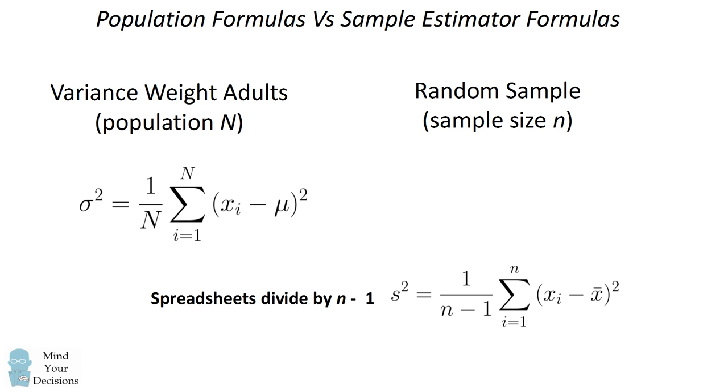You actually may have encountered this formula if you use a spreadsheet. You'll see that many times they'll calculate the sample variance and they'll divide by n minus 1. So this is also true for the sample standard deviation. The lesson here is that the population formula will not always apply when you're looking at a smaller sample. Sometimes the sample formulas need to be adjusted to get an accurate estimator of the population.